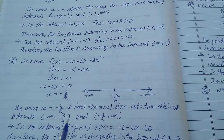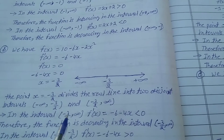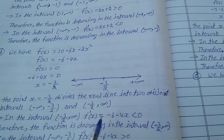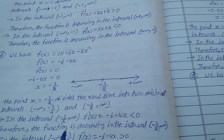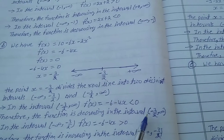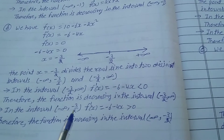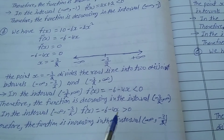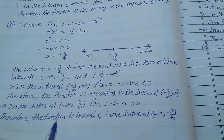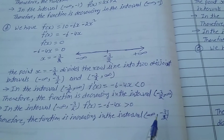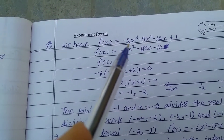The two intervals are (-∞, -3/2) and (-3/2, +∞). In the interval (-3/2, +∞), f'(x) = -6 - 4x < 0, so the function is decreasing. In the interval (-∞, -3/2), f'(x) = -6 - 4x > 0, so the function is increasing in (-∞, -3/2).